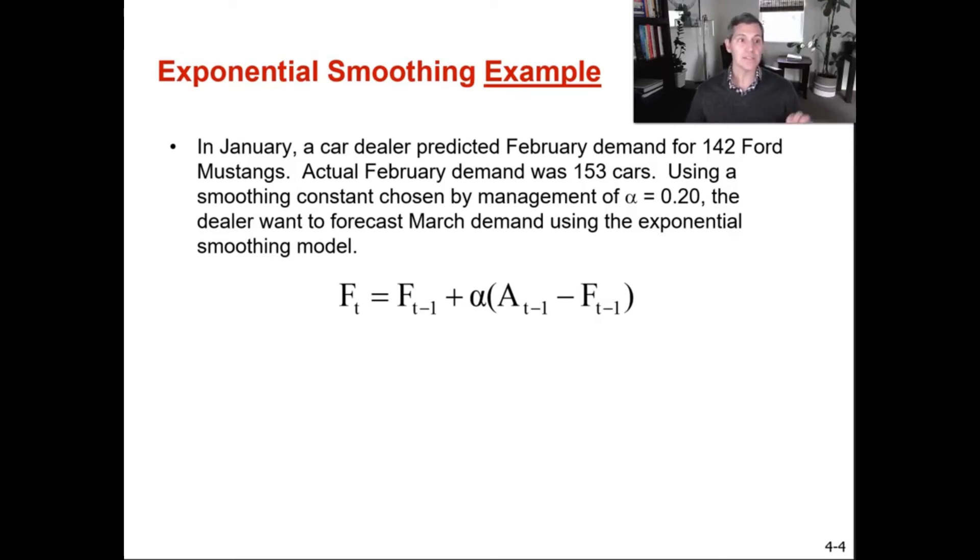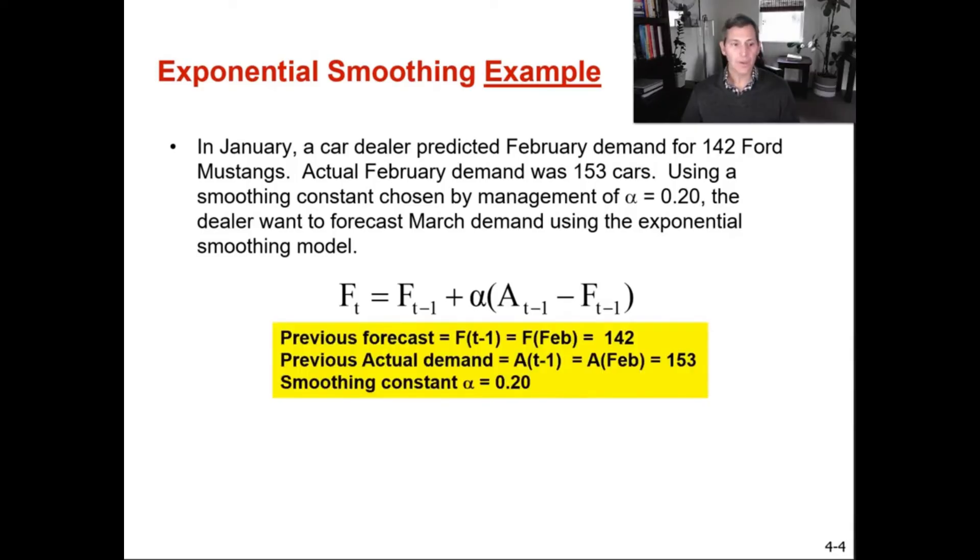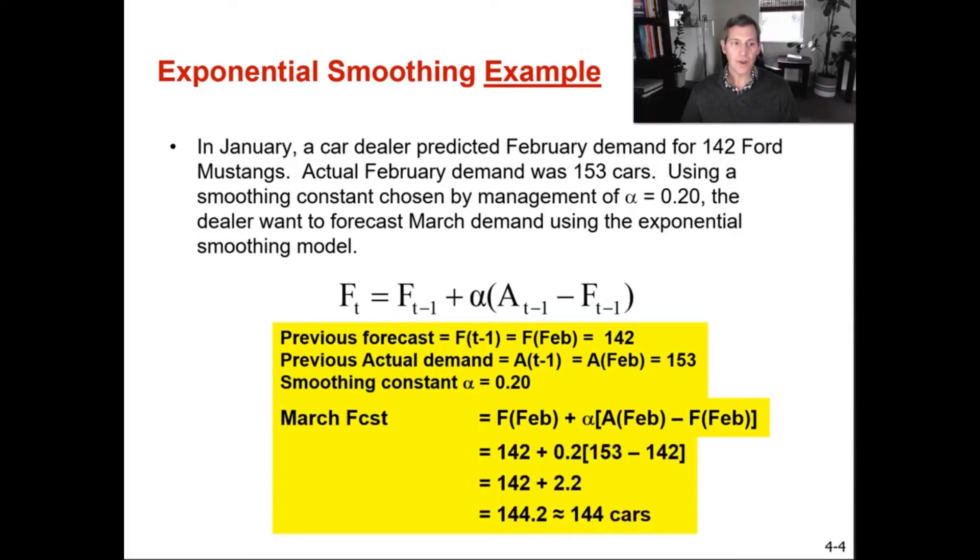But I digress. Let's figure out when we use that alpha of 0.2, what will our forecast be going forward for March. So doing that is simple. All we do is we take the March forecast. To calculate our March forecast, we've got our predicted February demand of 142, plus our actual February demand of 153.